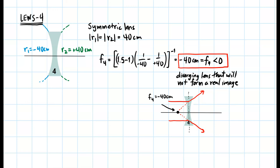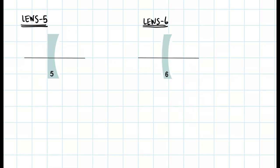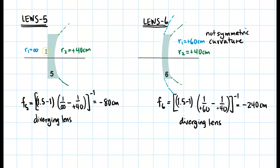The ray diagram shows the focal length falling on the left side. Moving on, lenses 5 and 6 are done simultaneously. For lens 5, the first surface is at infinity and the second surface is curved to the right, giving a positive radius. Substituting gives focal length five equal to negative 80 centimeters — a diverging lens. For lens 6, both radii of curvature fall on the right side, and the calculation gives negative 40 centimeters, which is also a diverging lens.